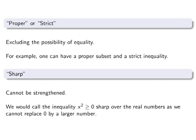Proper or strict, excluding the possibility of equality. So one can have a proper subset and a strict inequality. Sharp, cannot be strengthened. We would call the inequality x squared is greater than or equal to zero sharp over the real numbers, as we cannot replace zero by a larger number and thereby strengthen the inequality.